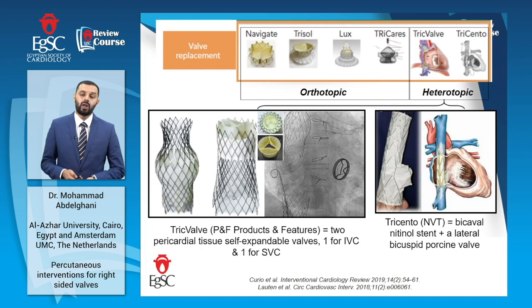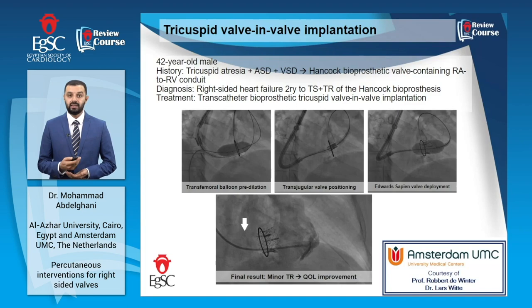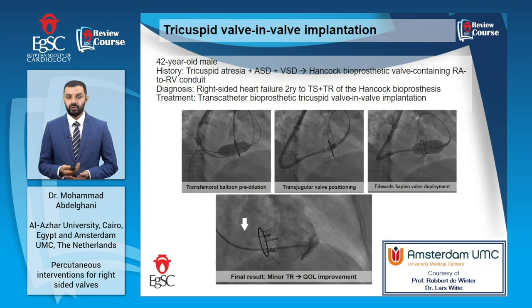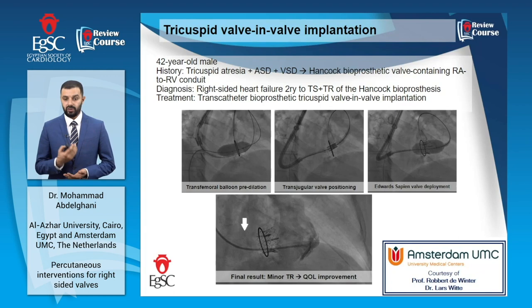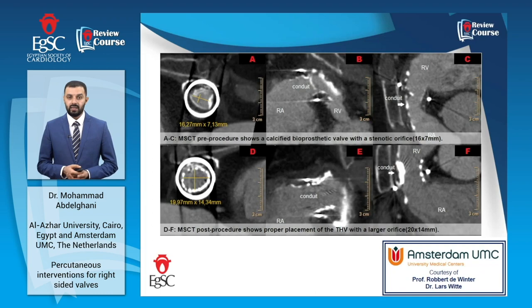This is a 42-year-old male with history of tricuspid atresia, ASD, and VSD who underwent surgery to implant a Hancock bioprosthetic valve containing an RA-to-RV conduit. He presented recently with right-sided heart failure secondary to combined tricuspid stenosis and regurgitation of the Hancock bioprosthesis. The heart team decided to offer him transcatheter bioprosthetic tricuspid valve implantation. Procedural steps included transfemoral balloon predilatation, transjugular valve positioning, Edwards SAPIEN valve deployment, and a favorable final angiographic result, which translated into significant improvement in quality of life. CT scan documents how the valvular orifice was improved after valve-in-valve implantation.